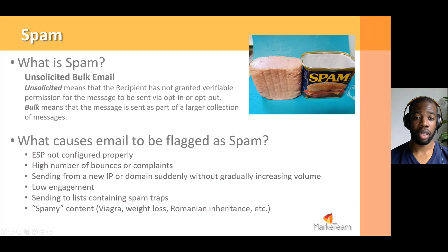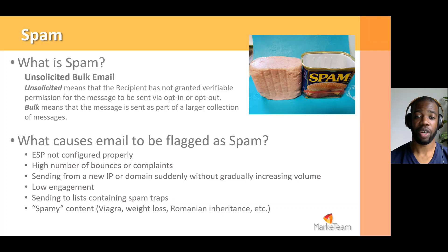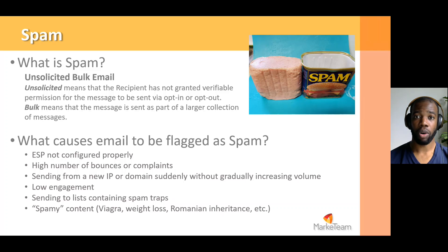So what is spam? The technical definition of spam is unsolicited bulk email. Unsolicited means that the recipient has not granted verifiable permission for the message to be sent via opt-in or opt-out. Bulk means that the message is sent as part of a larger collection of messages, or in other words, that the email was sent as a batch to a large group of recipients.